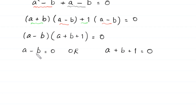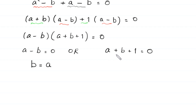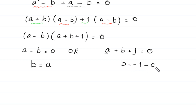From this factored equation, either a minus b equals 0, giving b equals a, or a plus b plus 1 equals 0, giving b equals negative 1 minus a.